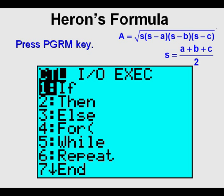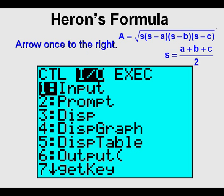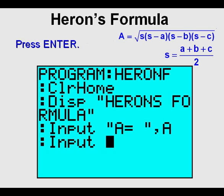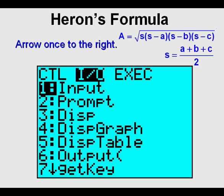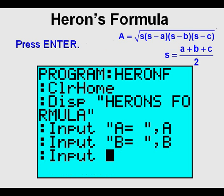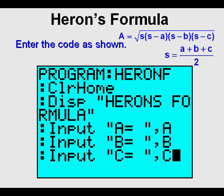Press the program key, arrow once to the right to the input-output menu, and choose Input by pressing Enter. Enter the rest of the line just like the line above, except using B instead of A. Remember to enter the equal sign by pressing 2nd, then math for the test menu, then Enter for the equal sign. If you have trouble remembering how to do it, you can go back in the lesson to where we entered the A code line. After that, press Enter. Then repeat the same process for C — entering the next line of code using C instead of A or B.